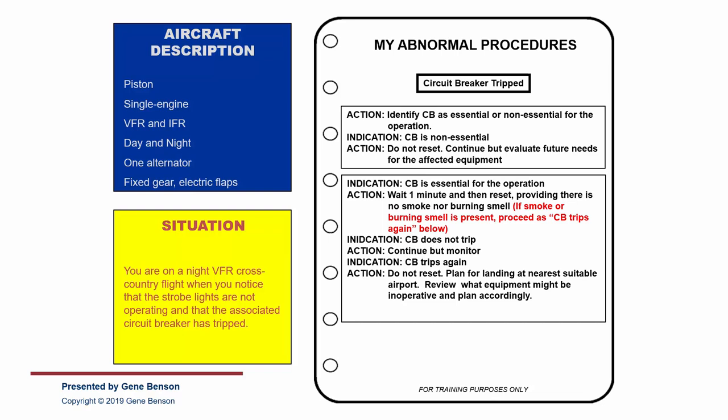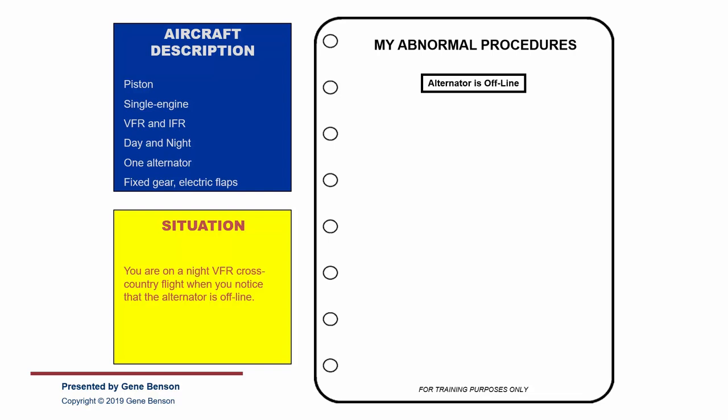Here is a related but different scenario. You are on a night VFR cross-country flight when you notice that the alternator is offline. You would notice this by seeing a negative reading on an ammeter or a zero reading on a load meter. It is important to scan the engine and system instruments frequently — some pilots don't look at those instruments from the time they do the run-up prior to takeoff until the next run-up. The sooner a problem is recognized, the more likely it can be dealt with successfully.